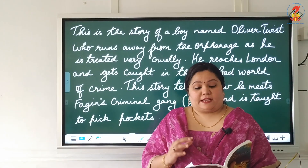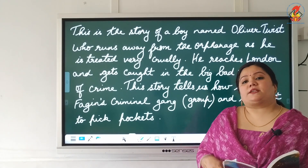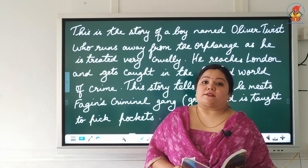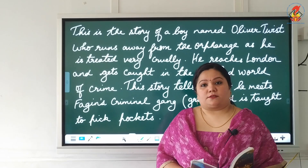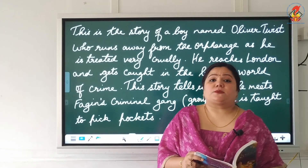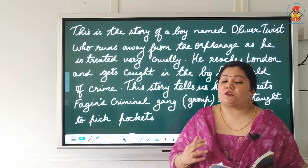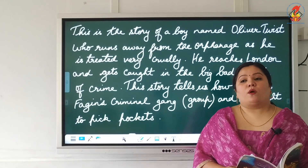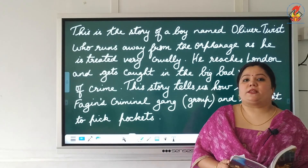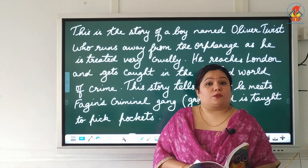Oliver Twist is a story of a small boy called Oliver Twist who lives in an orphanage. He is an orphan who is treated very badly. One fine day he runs away and gets caught up in the big bad world of crime in London. It is possible for children and young adults to fall into various traps that exist in society. Many people exploit children and young adults to carry out criminal activities, so one has to be careful wherever we go.